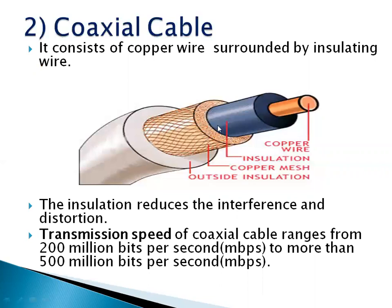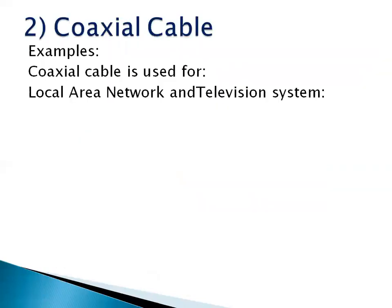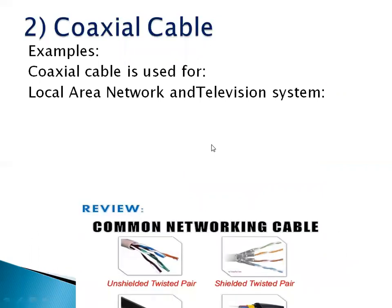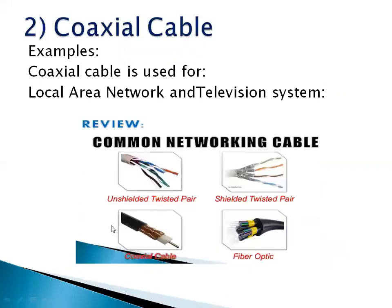This insulation reduces interference and distortion. The transmission speed of coaxial cable ranges from 200 million bits per second to 500 million bits per second. Coaxial cable is used in local area networks and television systems — the cable you insert into receivers connected to your TV at home is a coaxial cable.